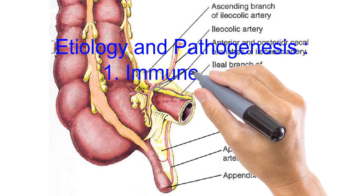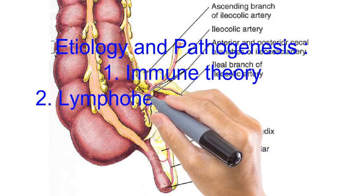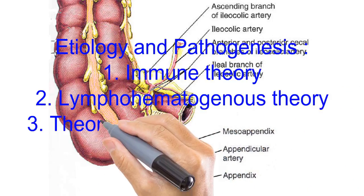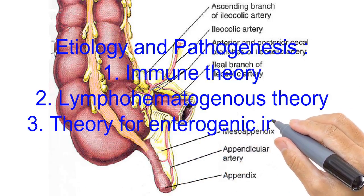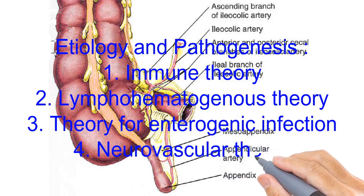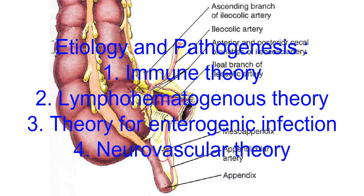Etiology and pathogenesis: there are four main theories for the pathogenesis of appendicitis — immune, lymphohematogenous theory, theory of enterogenic infection, and neurovascular theory. It is well known that a diet rich in animal proteins predisposes to intraluminal rotting that may cause acute appendicitis. Infection of the appendix occurs mainly from the lumen of the cecum. The appendix vermiformis is rich in lymphoid tissue, and hyperplasia of lymphoid follicles leads to appendicostasis and cavity closure.